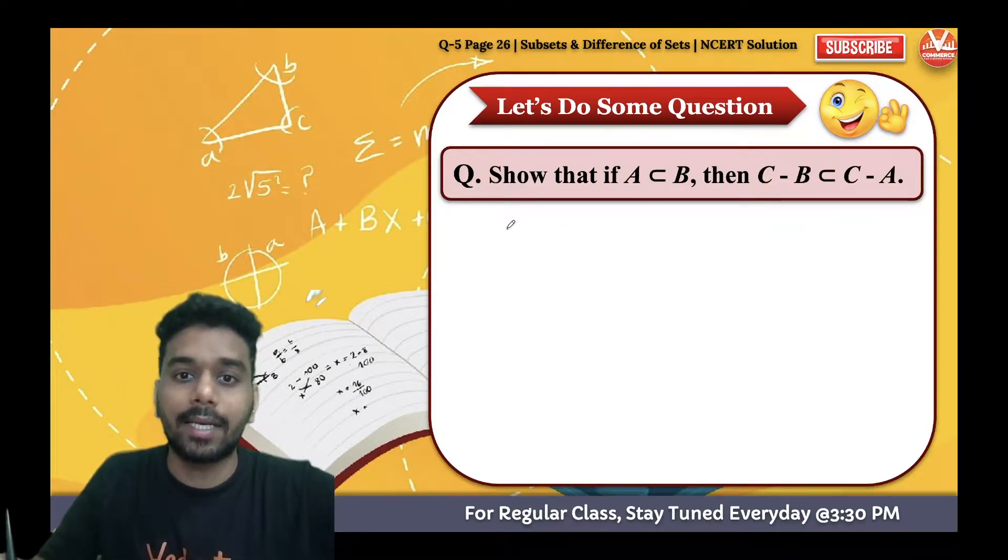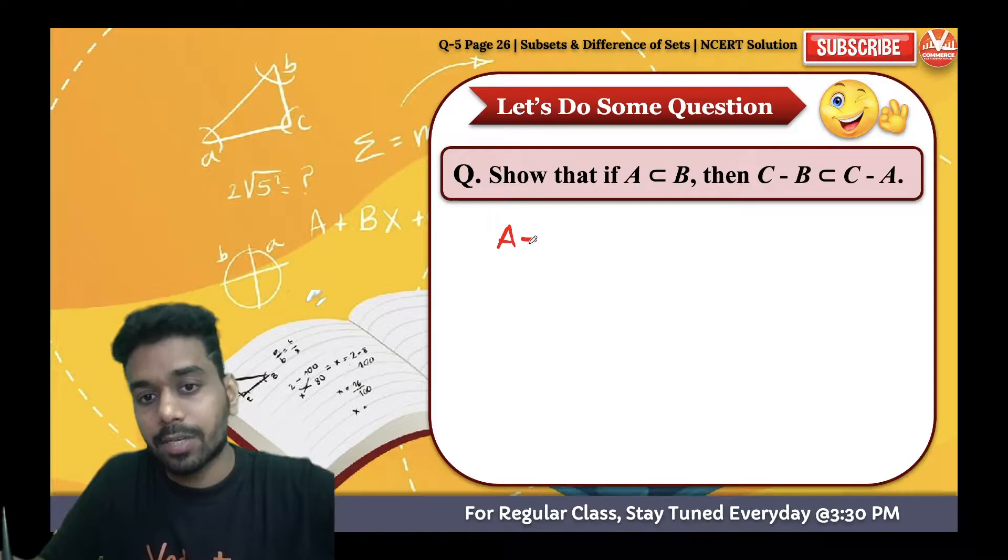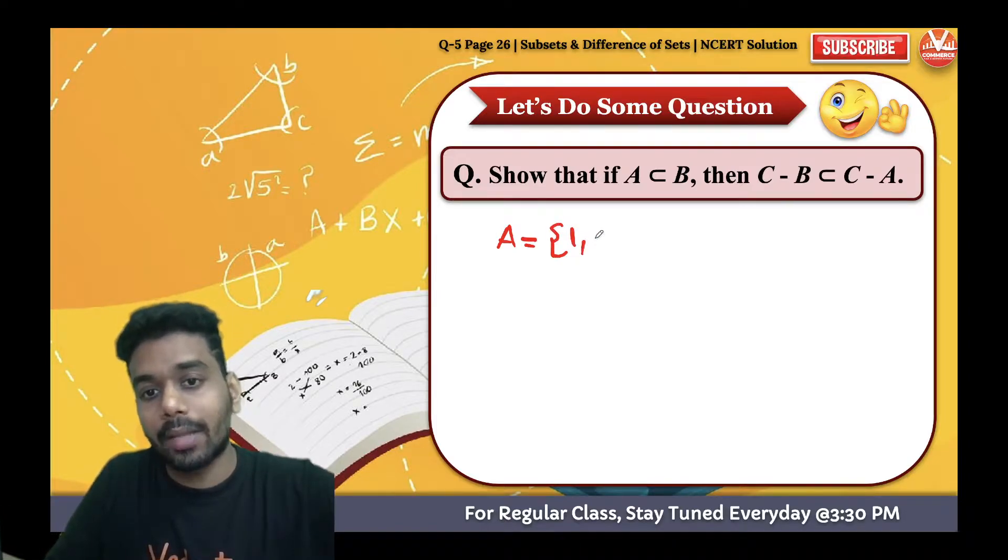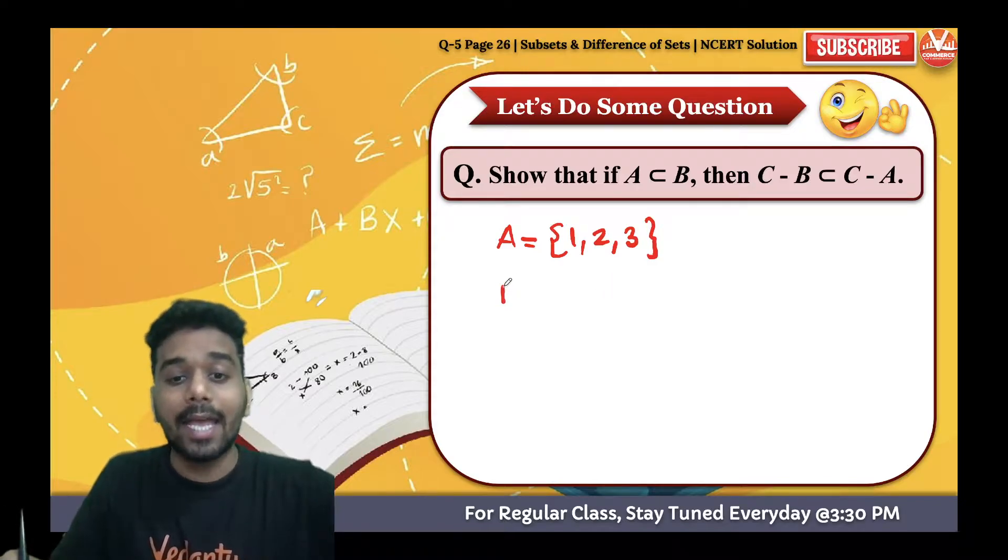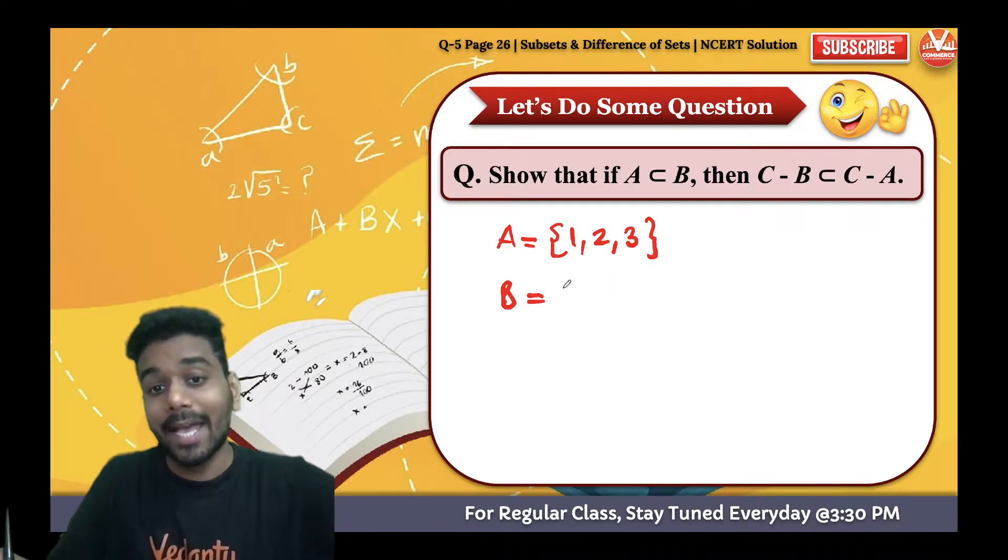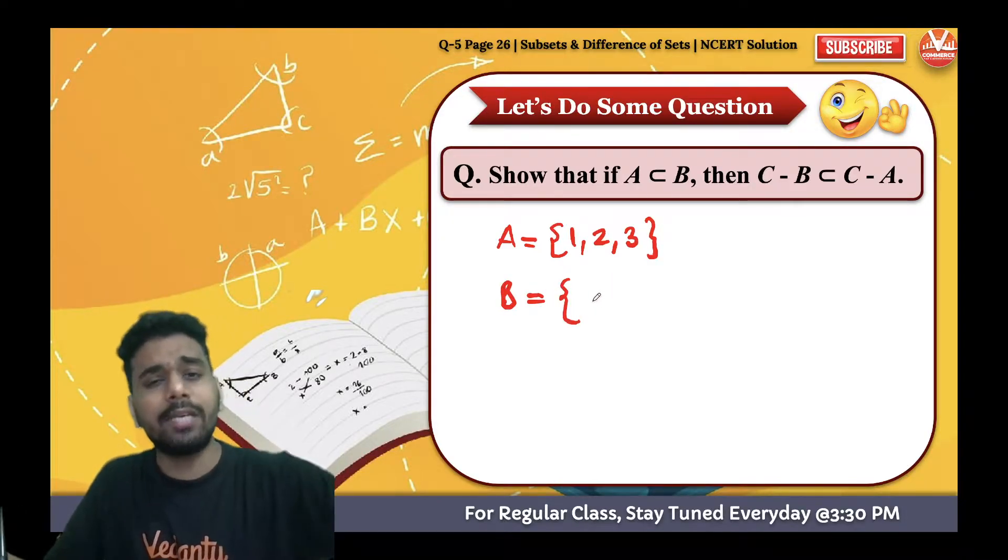Subset means let's suppose if A is {1, 2, 3}. Now if A is the subset of B, which clearly means all the elements of A should be in B, and B can have other elements also.